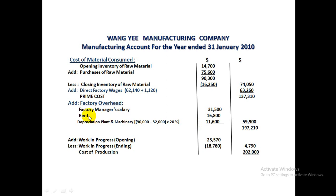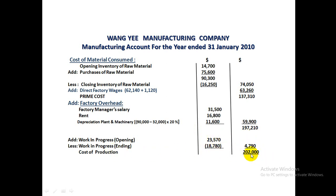Rent is taken as three-fifths of the total, as apportioned to the factory. The total Factory Overhead is added to Prime Cost to give the Cost of Goods Produced. Opening Work in Progress is added, and Closing Work in Progress is subtracted. This gives the total Cost of Production for Wang Yi Manufacturing.